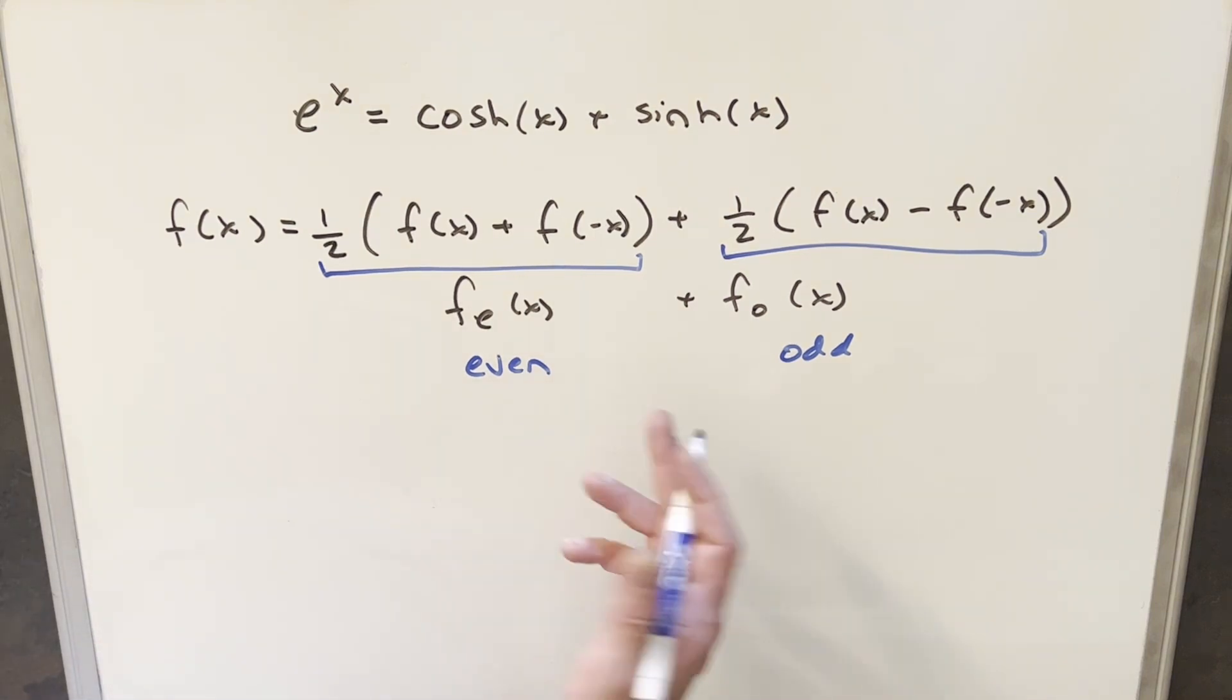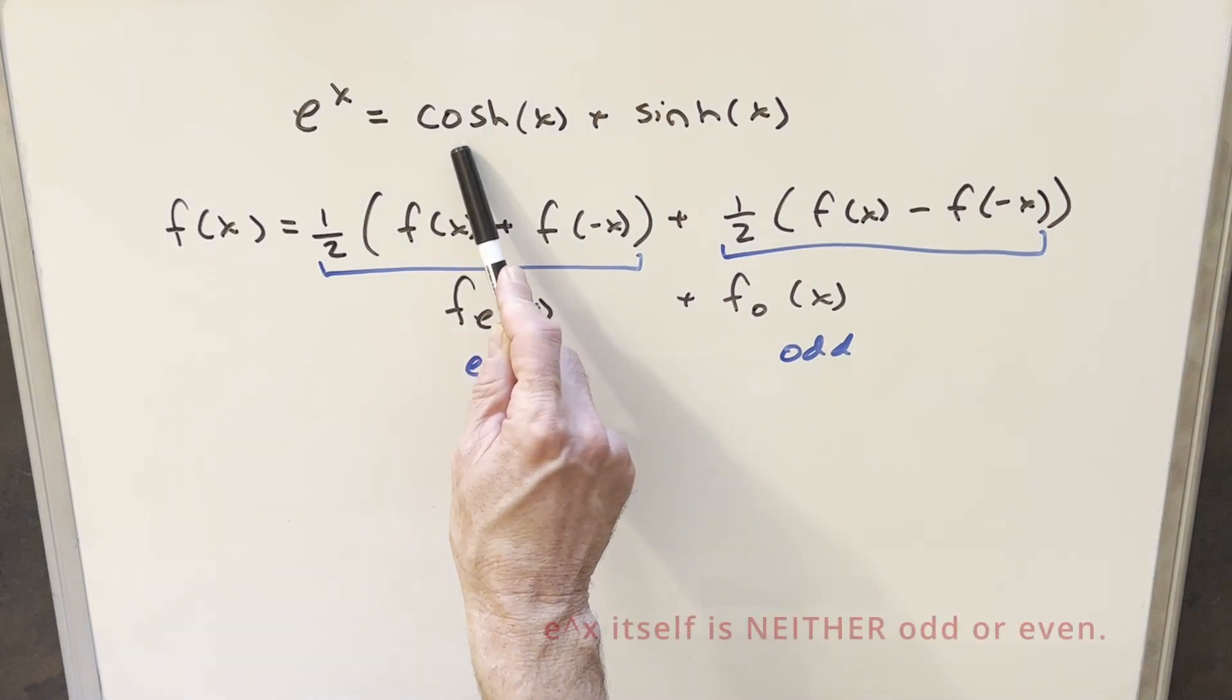You may notice for some functions you end up getting a zero and it's not that interesting, but you can just easily follow this and break up any function this way. Maybe one of the more straightforward examples is just e to the x.